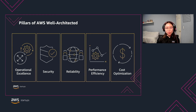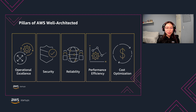Before diving into the tool, let's quickly recap what the Well-Architected review is. Well-Architected reviews give you a consistent approach to evaluate architectures and implement scalable designs. It's comprised of five pillars: operational excellence, security, reliability, performance efficiency, and cost optimization.